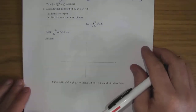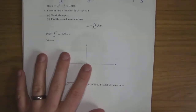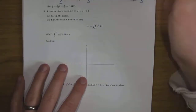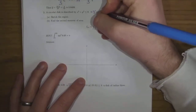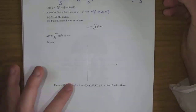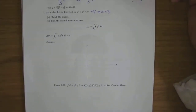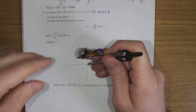A circular disk is described by x squared plus y squared less than or equal to nine, which is three squared, implying the radius is three. Sketch the region and find the second moment of area. It's a disk, so sketch it with radius three.